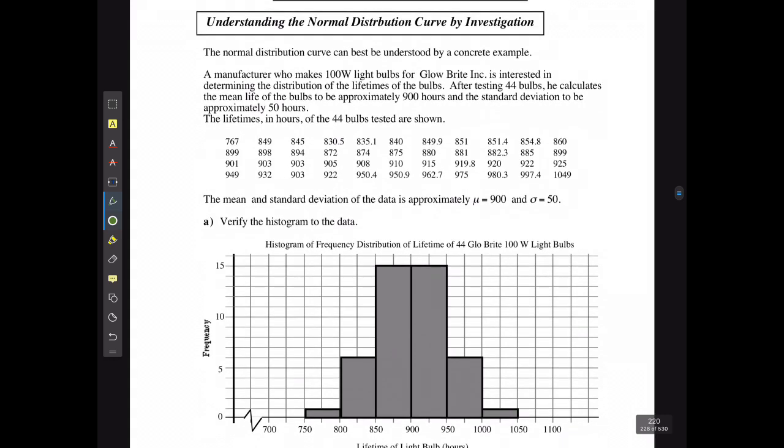The normal distribution curve can best be understood by a concrete example. A manufacturer who makes 100-watt light bulbs for Glow Bright Inc. is interested in determining the distribution of the lifetime of the bulbs. After testing 44 bulbs, he calculates the mean life of the bulbs to be about 900 hours and the standard deviation to be about 50 hours. The lifetimes in hours of the 44 bulbs tested are shown below.